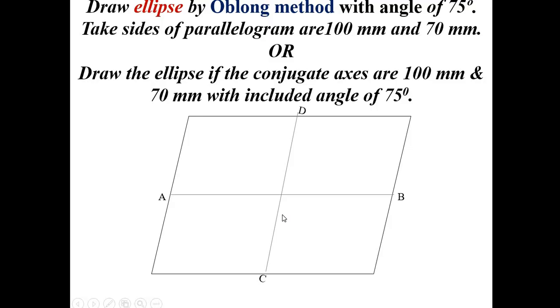Divide each of these lines into four equal divisions. Number them starting from 0, 1, 2, 3, 4. Keep in mind that numbering should start with 0 and follow the same sequence on both lines.